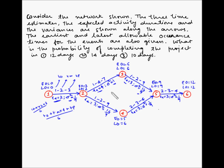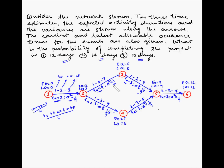Suppose you are the project manager and you present this network diagram to senior management, and the management asks: what is the probability of completing this entire project in 12 days, 14 days, and 10 days? Let's see how you can find this using the information you already have.